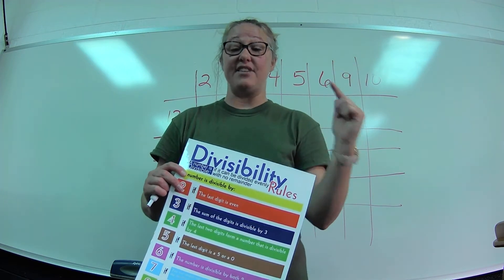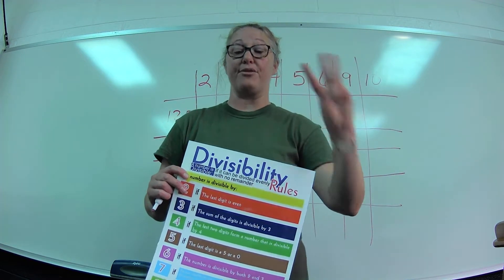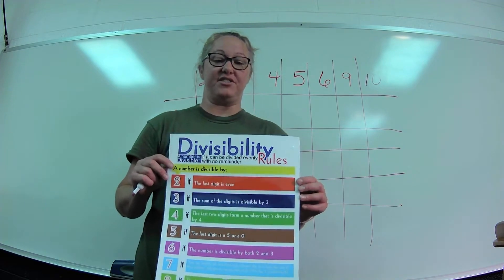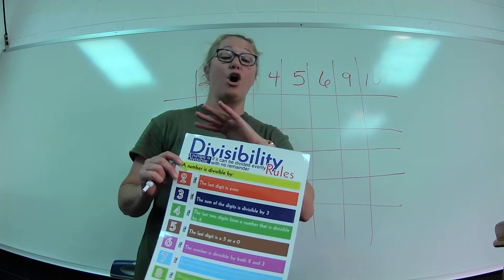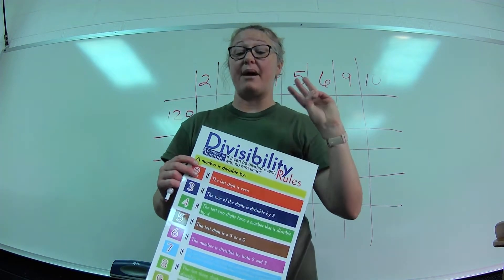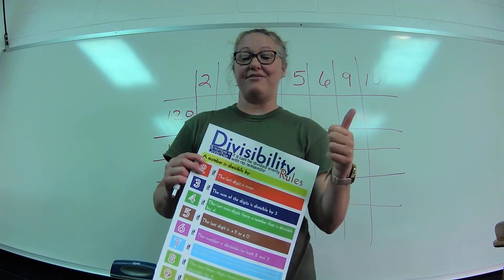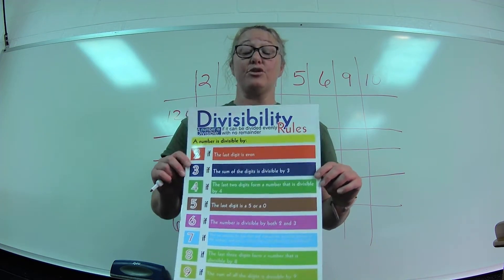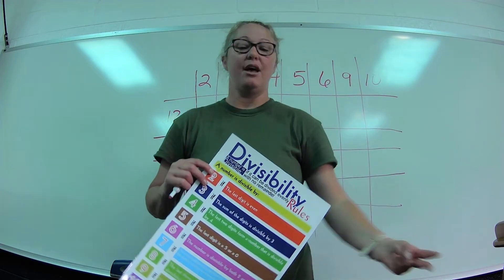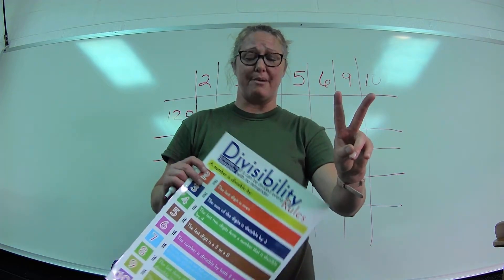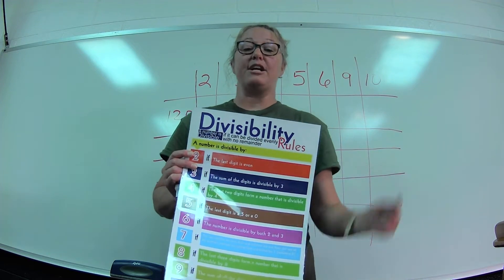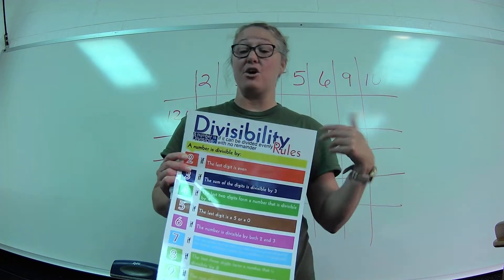Any number ending in 0, 2, 4, 6, or 8 is divisible evenly by 2. For the rule of 3: you take the sum of the digits, and if that sum is a multiple of 3, the whole number is divisible by 3. For 4: the last two digits either have to be double zero — like 100, 200, 300 — or the last two digits themselves must be divisible by 4, like 24. If the last two digits are 18, four doesn't go into 18, so the whole number is not divisible by 4.